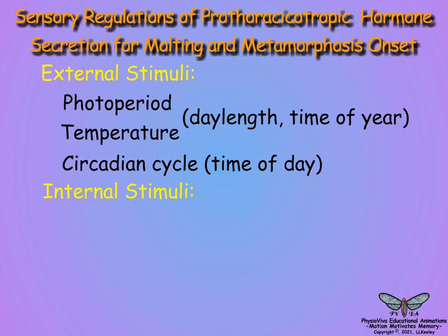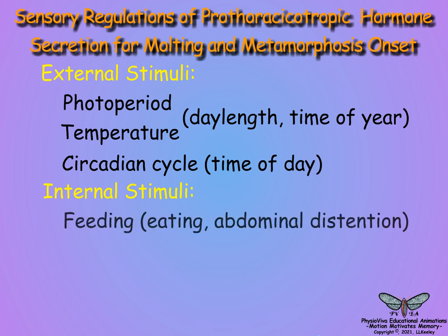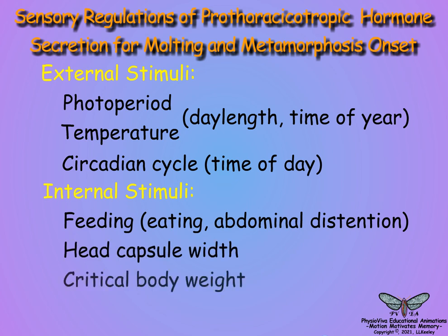Identified internal regulatory stimuli for the onset of molting include mechanical feeding activities and abdominal distention, head capsule width, or attainment of a critical body weight sufficient to sustain the pupa long enough to complete adult metamorphosis. Next, hormones related to molting will be described.